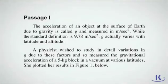The acceleration of an object at the surface of Earth due to gravity is called g, and measured in meters per second squared. While the standard definition is 9.78 meters per second squared, g actually varies with latitude and altitude.